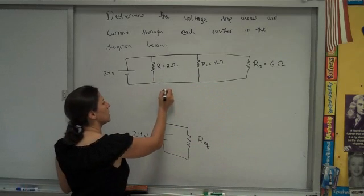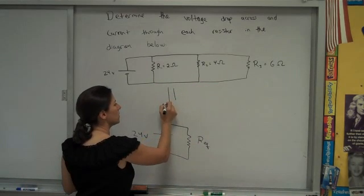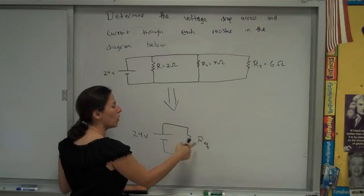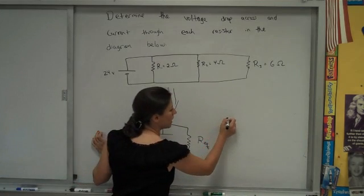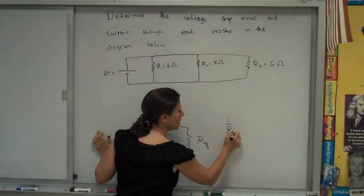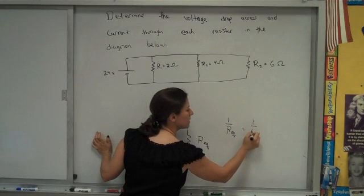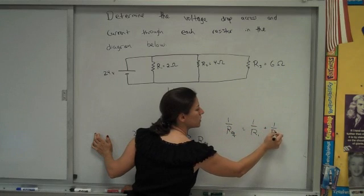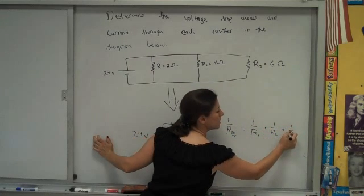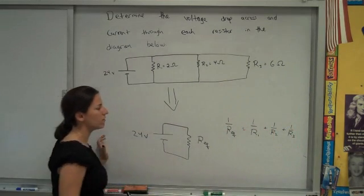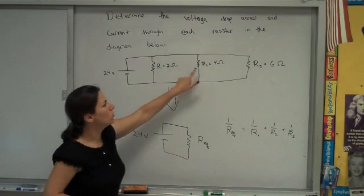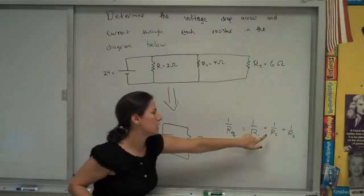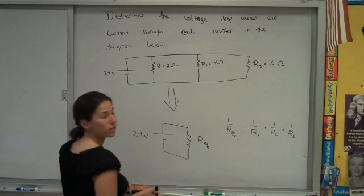So in parallel, we're going to combine those three into one equivalent resistance. And the rule for combining in parallel looks a little strange. To solve for the equivalent resistance, you add up the inverse of all the resistances you have, and then you take the inverse again to solve for the equivalent resistance. So we'll sub in two, four, and six, here, here, and here, and solve for the equivalent resistance.